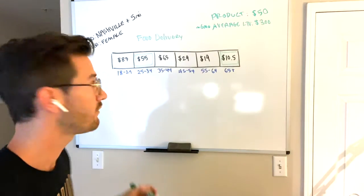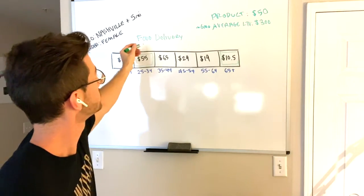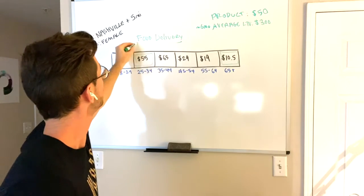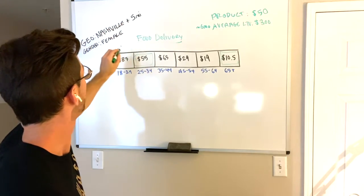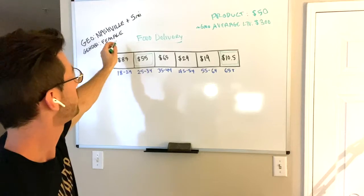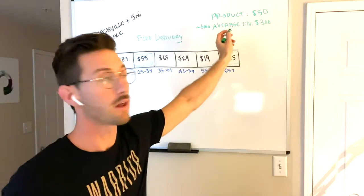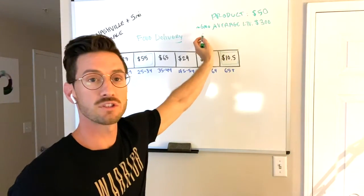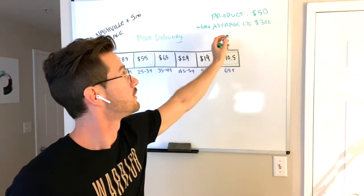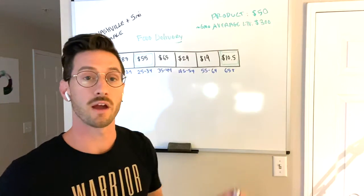So here's data from a real campaign. We have a client with a farm fresh food delivery service in Nashville, Tennessee and five miles around the area targeting just females. The product is $50 and customers stay on average six months. So the average lifetime value is $300.